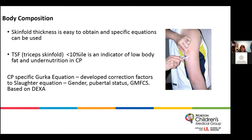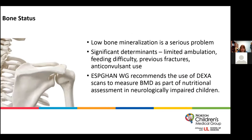For body composition, skinfold thickness requires only a caliper. A tricep skinfold below the 10th percentile indicates low body fat and undernutrition. Measurements can be plugged into calculations on sites like PD Tools, and the CP-specific Gurka equation has correction factors built in for this population. We also assess bone status, as low bone mineralization is a problem due to limited ambulation, feeding difficulty, previous fractures, or anticonvulsant use.